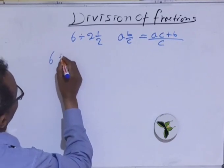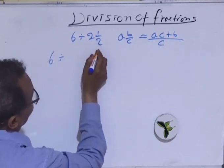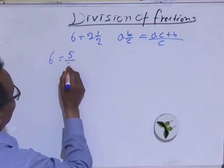So 6 divided by 2 and 1 half. 2 times C is 4, plus 1 is 5, so 5 over 2.